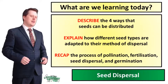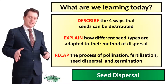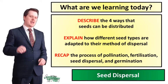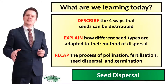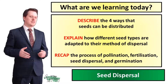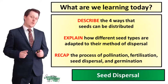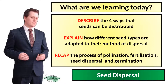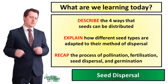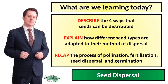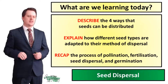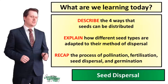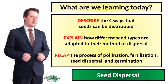Today we're going to describe the four ways that seeds can be distributed, and we're going to explain how different seed types are adapted to their method of seed dispersal. We are also going to link all the ideas from this lesson and our previous two lessons by recapping the process of pollination, fertilisation, seed dispersal, and germination.